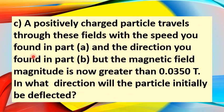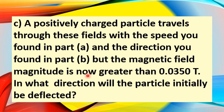Question C: a positively charged particle travels through these fields with the speed found in part A and the direction found in part B, but the magnetic field magnitude is now greater than 0.0350 tesla. In what direction will the particle initially be deflected?